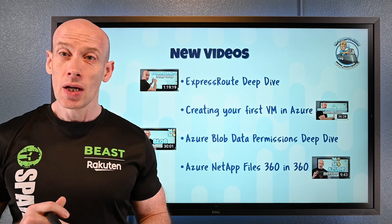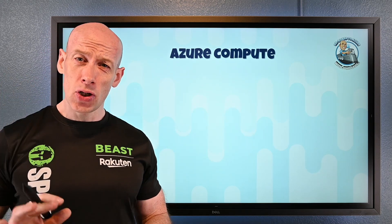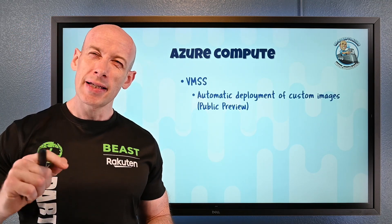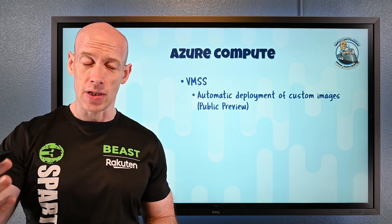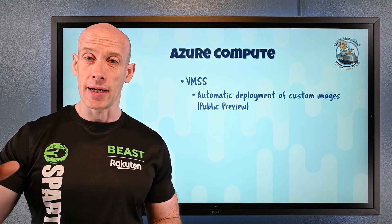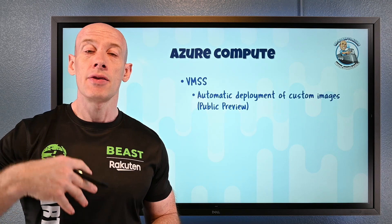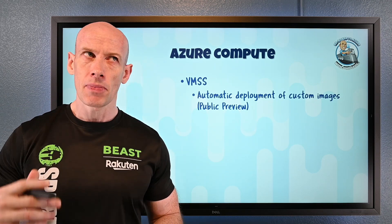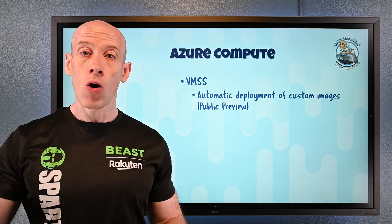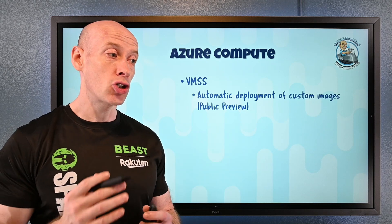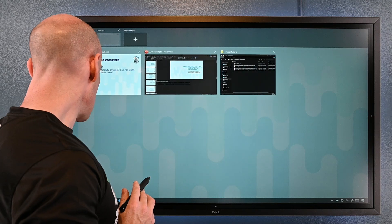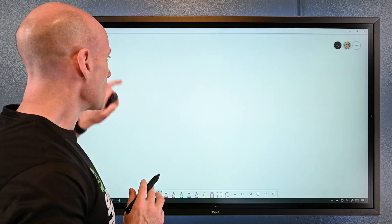So what's new? On the Azure compute side, virtual machine scale sets now have an automatic deployment option for custom images — this is in public preview. It already had this for marketplace images, where the OS owner would publish a new version and it would automatically roll that out to your scale set.